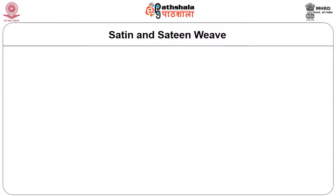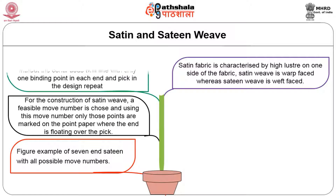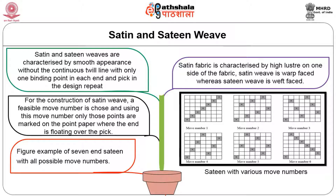The third basic weave is the satin or sateen weave, characterized by a smooth appearance without a continuous twill line, with only one binding point in each end and pick in the design repeat. Satin fabric is characterized by high luster on one side. Satin weave is warp-faced whereas sateen weave is weft-faced. For the construction of satin weave, a suitable move number is chosen, and using this move number, only those points are marked on the point paper where the end is floating on the pick. Figure 11 is an example of a seven-end satin with all possible move numbers shown.